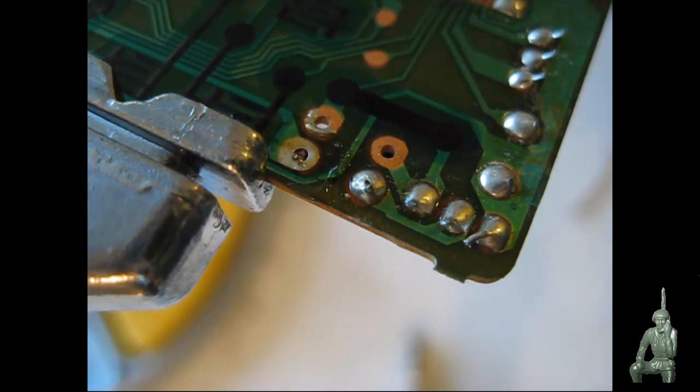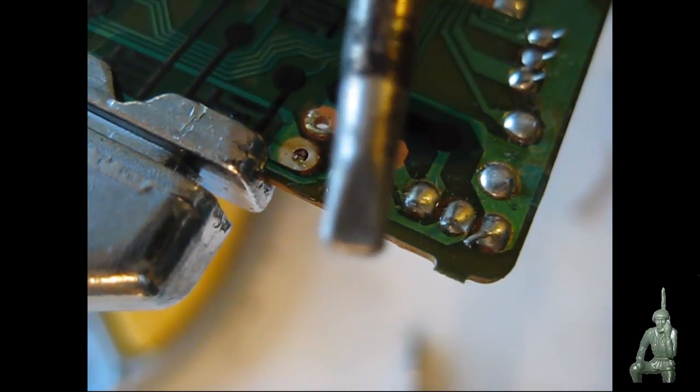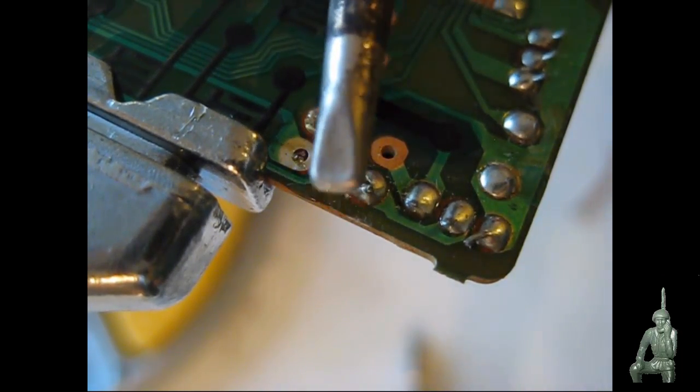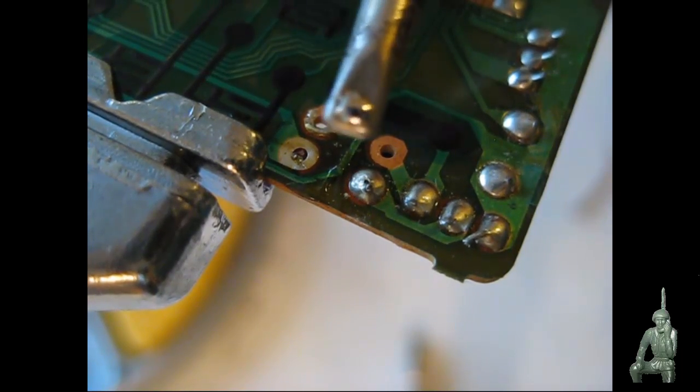I have the iron up to temperature here. I cleaned off the tip. We'll see if we can get this in frame for you. What I'm going to do is put a little dot of solder on the tip of that iron to help with the heat transfer. Let's see if you can see that dot of solder. There we go.